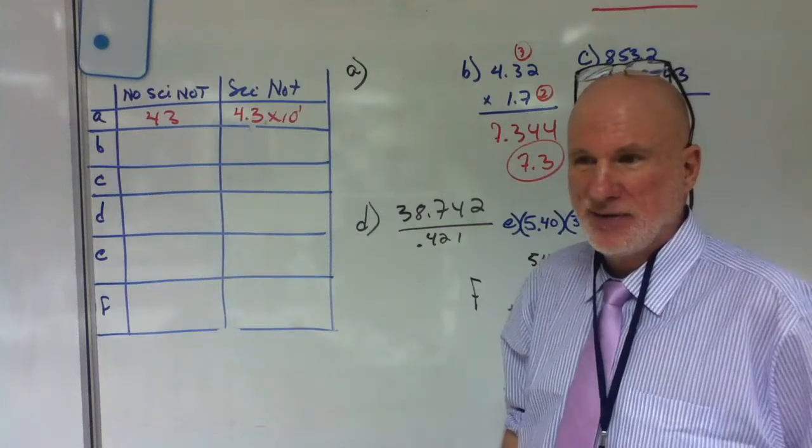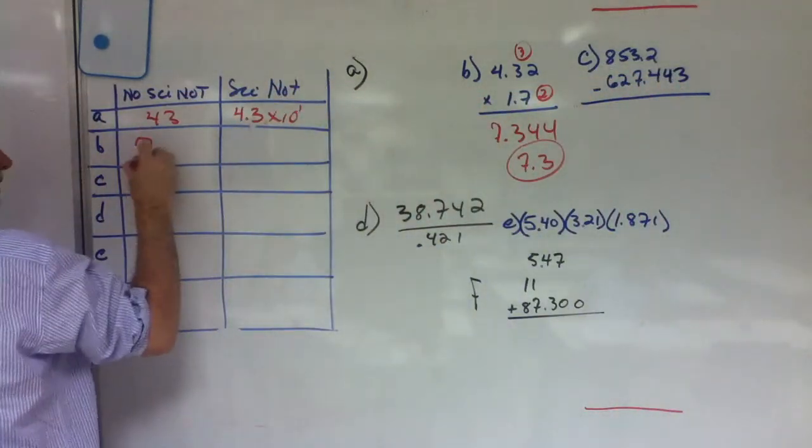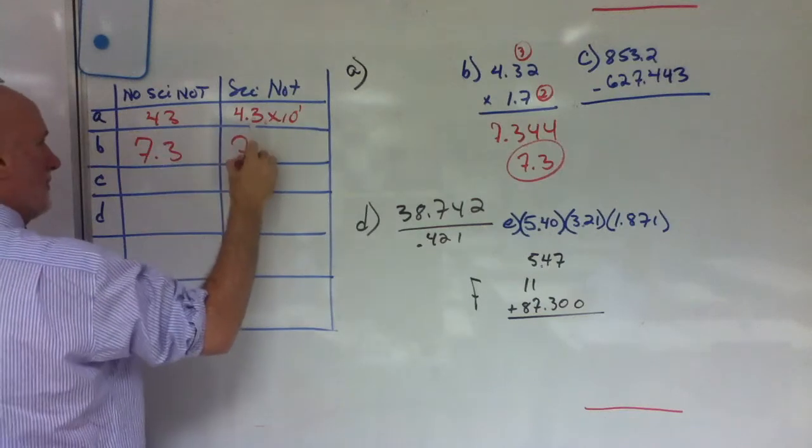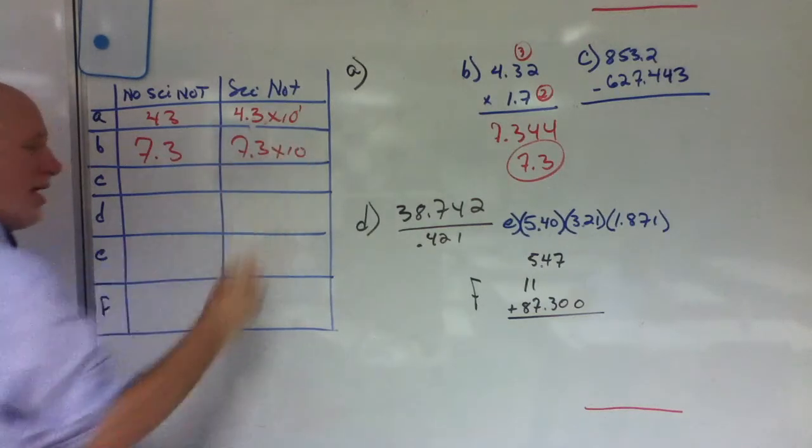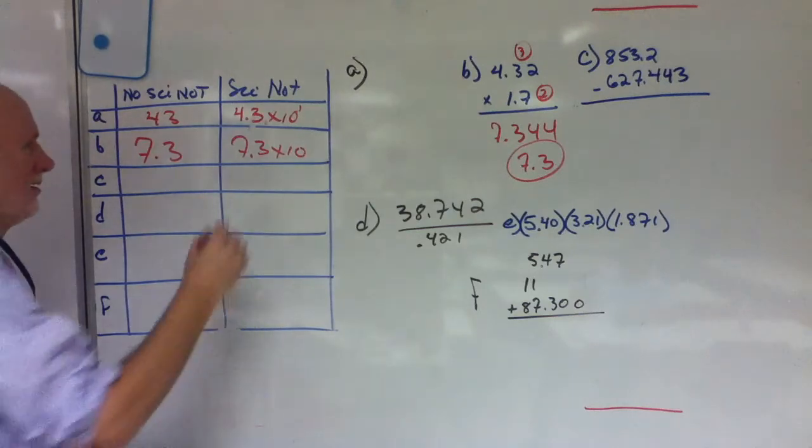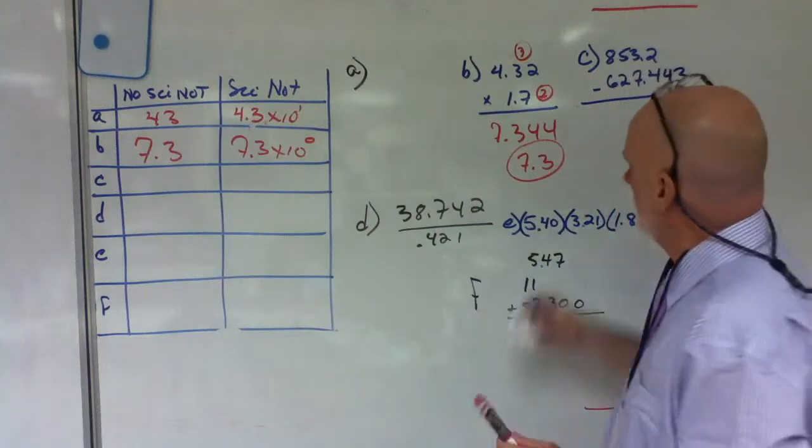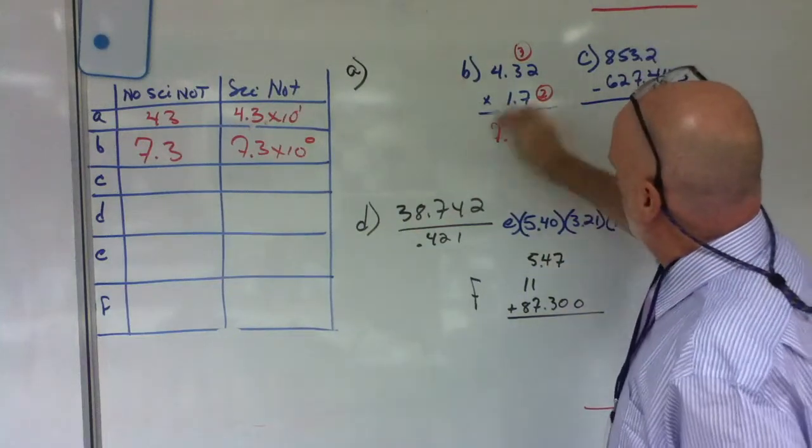How do I write that in scientific notation? I hope you have been doing your reading. It's 7.3 times 10 to the 1? 0. Very good. Times 10 to the 0. Excellent. I'm going to erase that problem. Give me even more room to work.